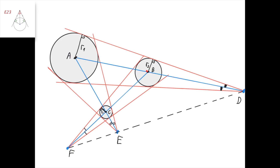Let's call the centers of the circles A, B, and C, and let's call the intersection points of the outer common tangent lines D, E, and F. Let the radius of this circle be R1, this circle R2, and this circle R3. We know that if we take the point of tangency here and the point of tangency here, then this angle is 90 degrees and this angle is also 90 degrees. Then we can apply the intercept theorem for this triangle, because this line is parallel to this line. And therefore, AD divided by DB equals R1 divided by R2.